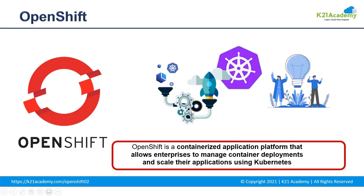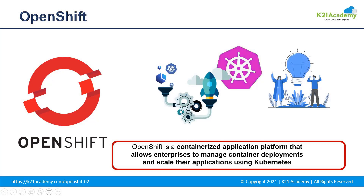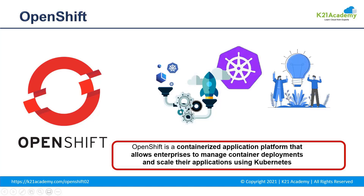OpenShift is a containerized application platform that allows enterprises to manage container deployments and scale their applications using Kubernetes. There are two perspectives on the web console — developer and administrator. As an administrator, you can manage the clusters, the users, the projects, and much more. It is a layered system wherein each layer is tightly bounded with the other using Kubernetes and Docker cluster. The architecture of OpenShift is designed to support and manage Docker containers hosted on top of all the layers using Kubernetes.